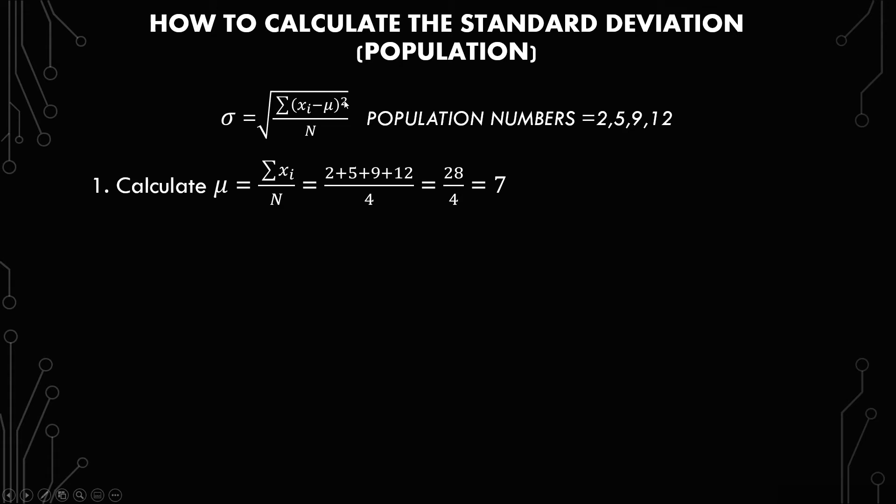The first thing you do is you calculate mu if mu is not given to you. In some cases, mu will be given to you, but if it's not, it's the exact same calculation as x bar. It's the summation of the x's over N, so it's 2 plus 5 plus 9 plus 12 over 4, which gives you 28 over 4, which gives you 7.